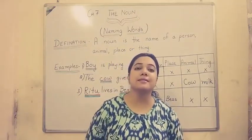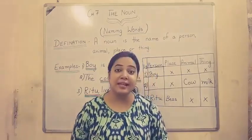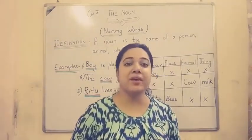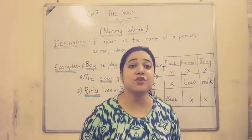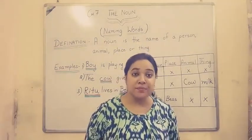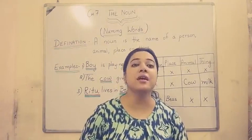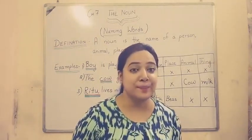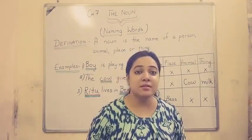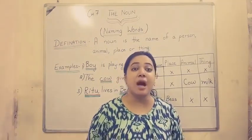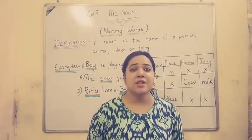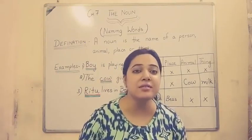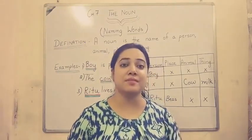Name of a place like Delhi, Paris, America, New York. Name of a thing — basket, razor, sharpener. You can call it by various names.